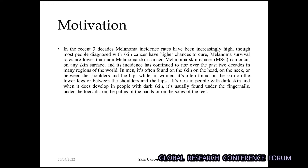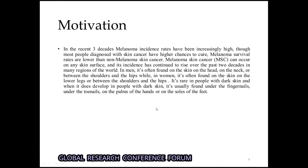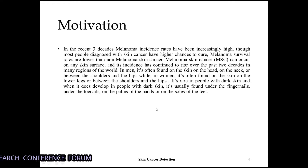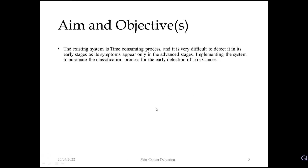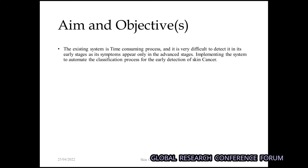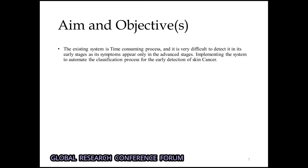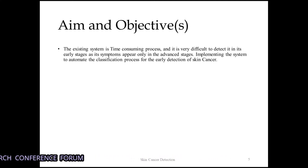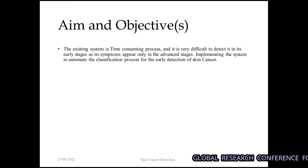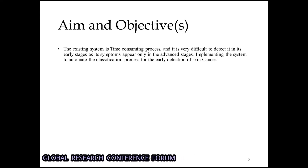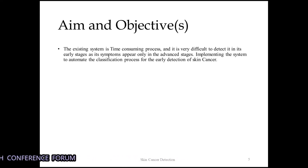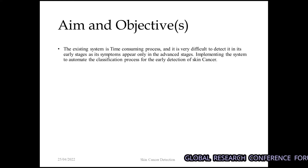In this project we are working on melanoma skin cancer. The main aim and objective of the project is that the existing systems are time-consuming and it is very difficult to detect cancer in its early stage, as symptoms appear only in the advanced stage. We are implementing a system to automate the classification process for early detection of skin cancer.